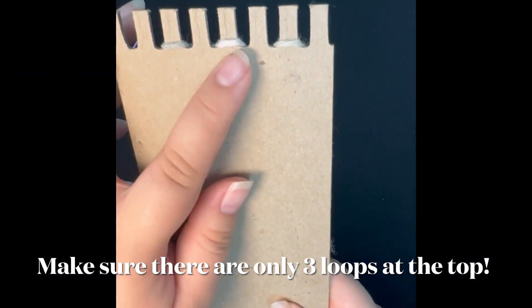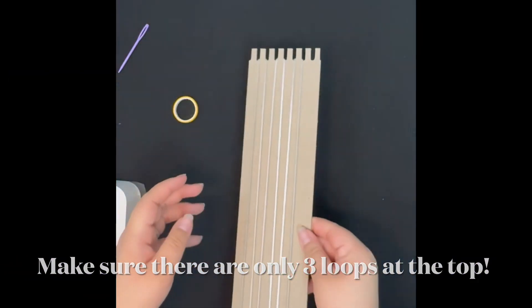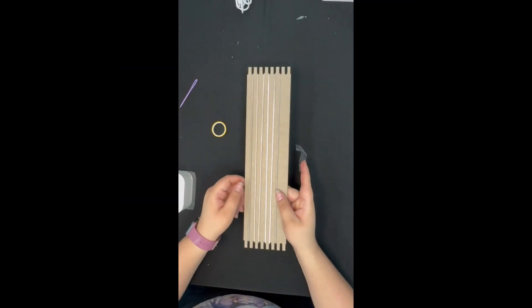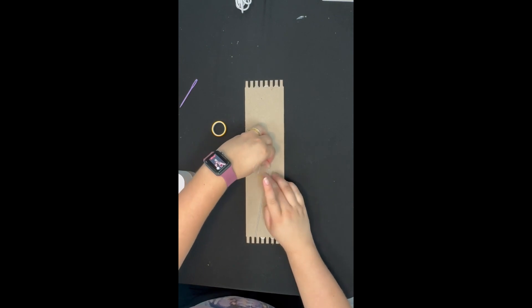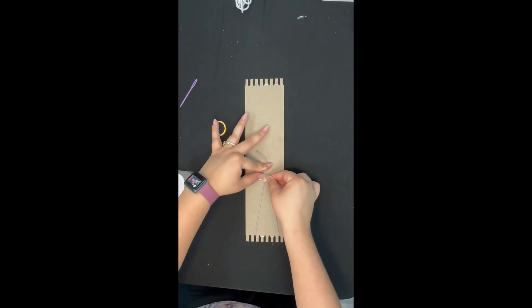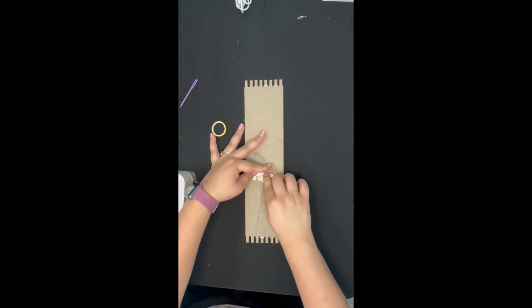You'll know that you warped your loom correctly if you see that there's only three loops at the top. At this point you want to make sure that your loom is very tight and secured. I went ahead and taped it again to make sure that it would be really tight.